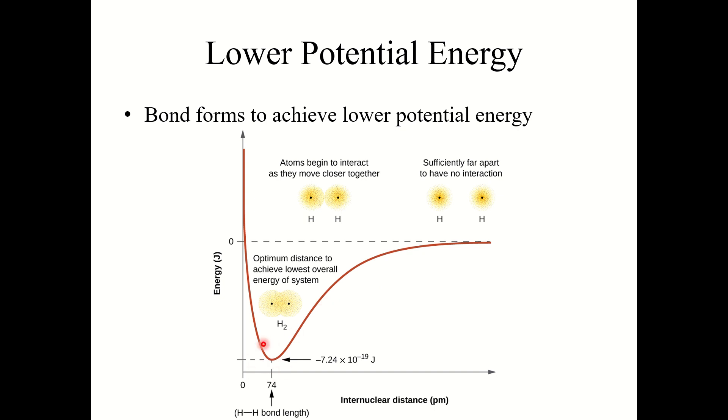So there is this nice happy middle ground here, where they're not too close where the nuclei repel each other, but they aren't so far that they have no interaction. They're kind of right in between here, the optimum distance that achieves the lowest overall energy of the system.